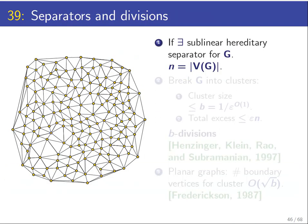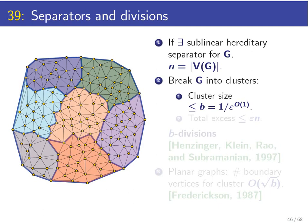It turns out that all you need are those hereditary sublinear separators. In particular, you can take the graph and apply a separator recursively until you break every cluster—you break the graph into patches where every patch has at most b vertices. This will be some polynomial in 1 over epsilon.